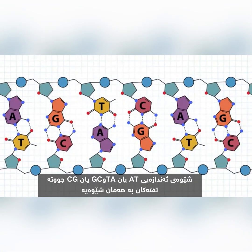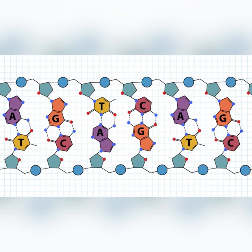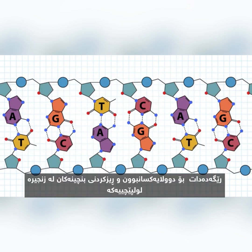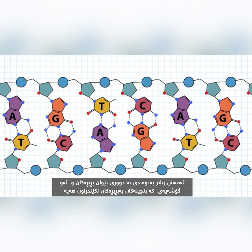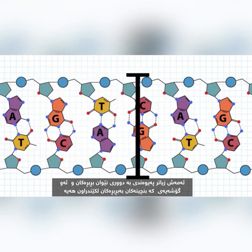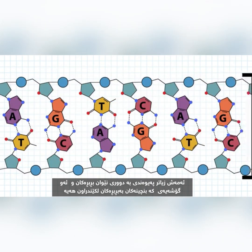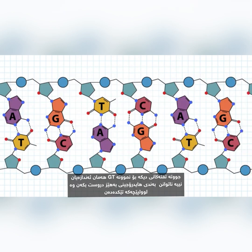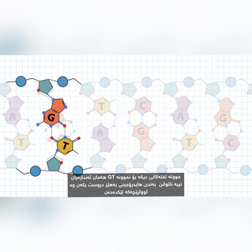The geometry of the AT or TA and GC or CG base pairs is the same, allowing for symmetry and base stacking in the helix. This mostly has to do with the distance between the backbones and the angles to which the base is attached to the backbone. Other base pairs, like GT for example, do not have the same geometry, cannot form strong hydrogen bonds, and disturb the helix.